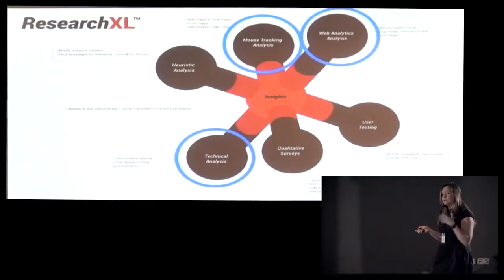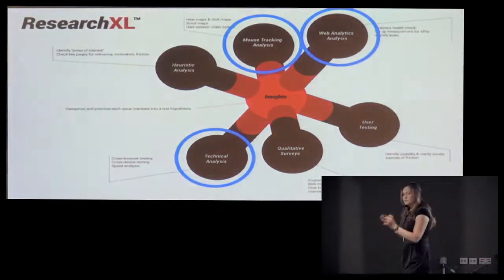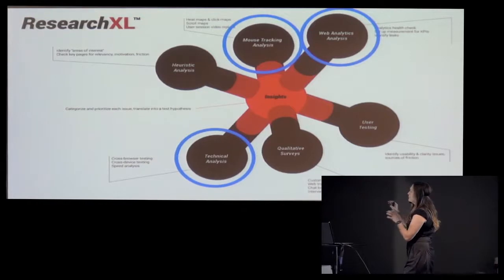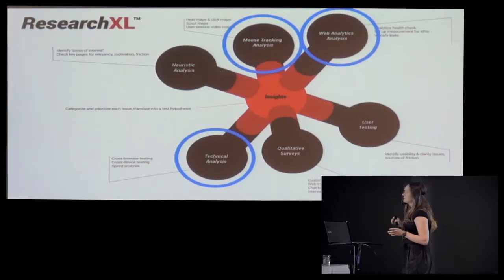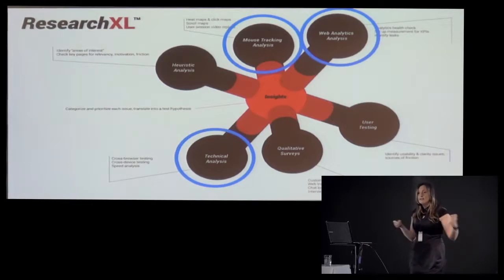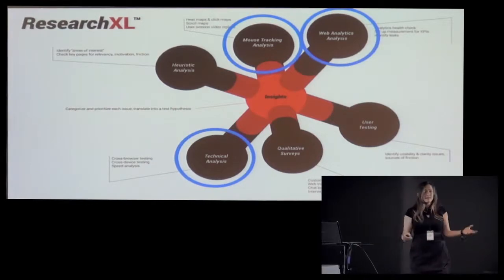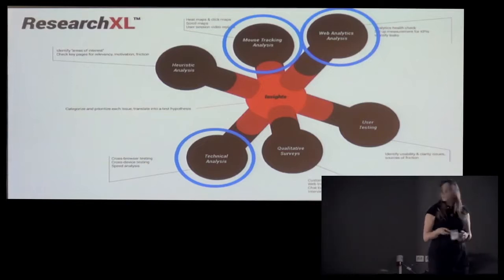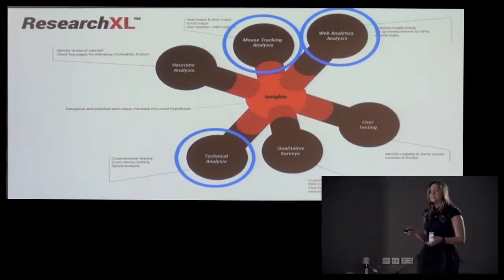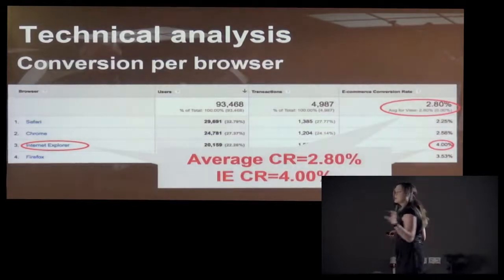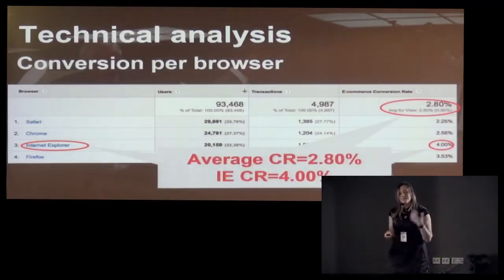Quantitative research doesn't really help if you don't do the qualitative first — those two have to go hand in hand. The three parts of the ResearchXL model that focus on quantitative data are: heat map analysis, analytics analysis, and technical analysis. Together they help narrow down where your website is experiencing problems, where it's leaking money.